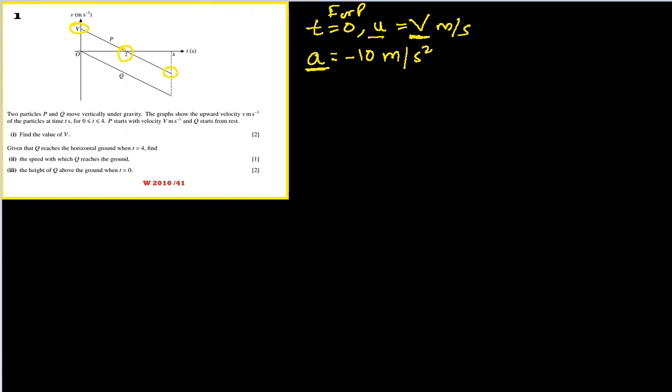We know the time is two seconds. The gradient of this VT graph, which is acceleration, is constant throughout, so it will be better to take where we know the time. Time is two seconds and we know final velocity is zero meters per second. Now we have everything, we can find v very easily.